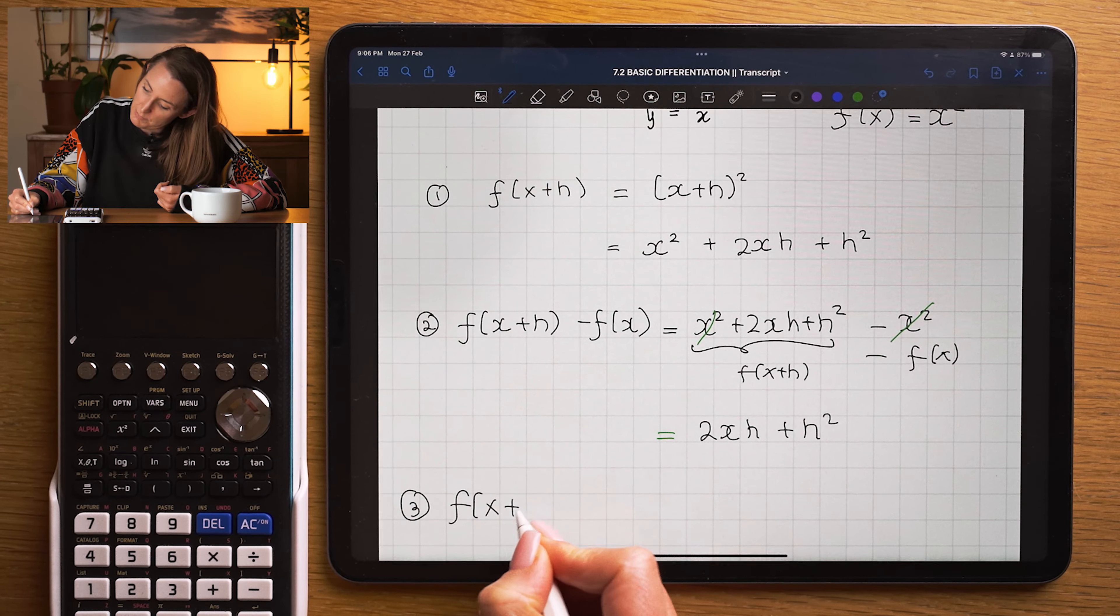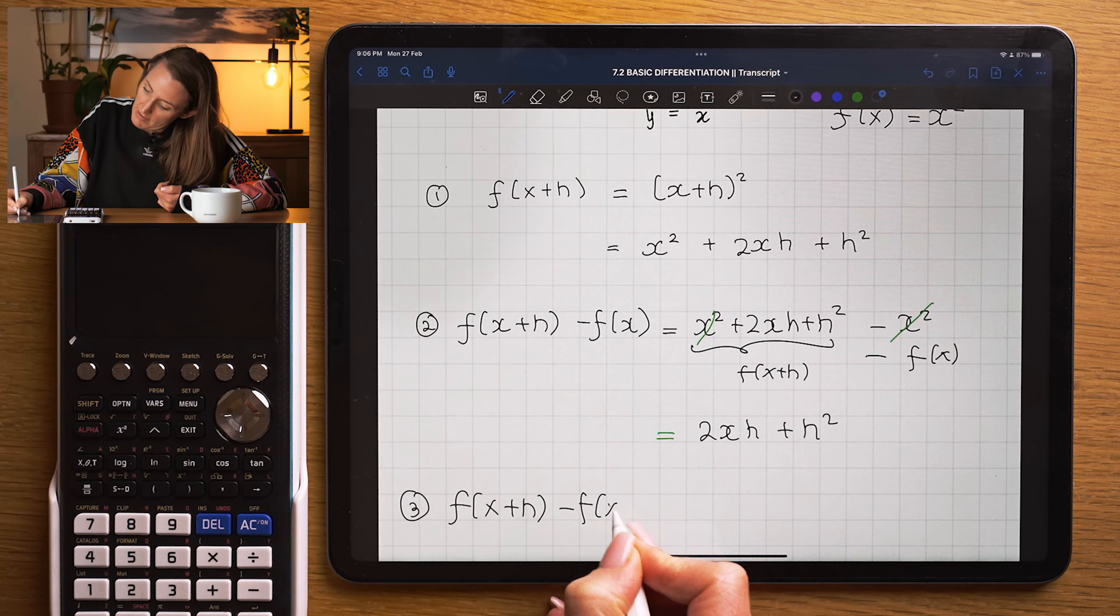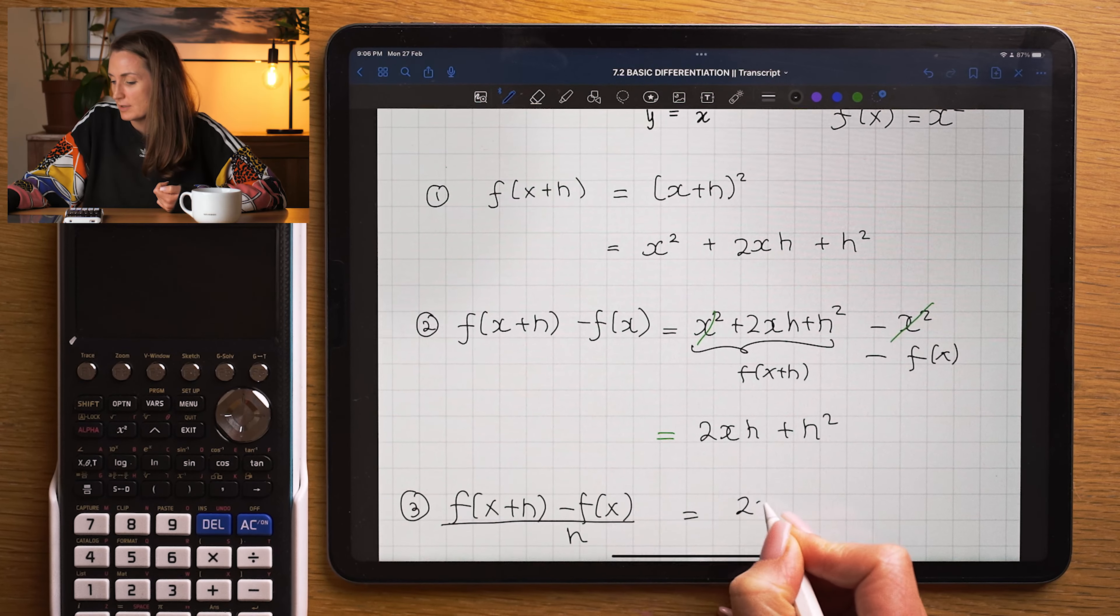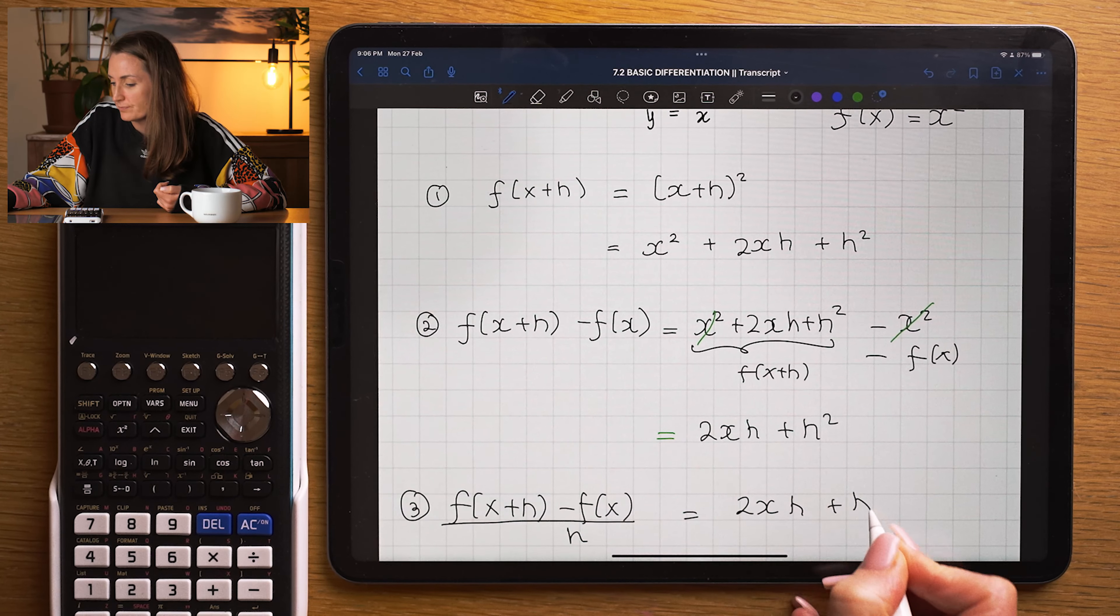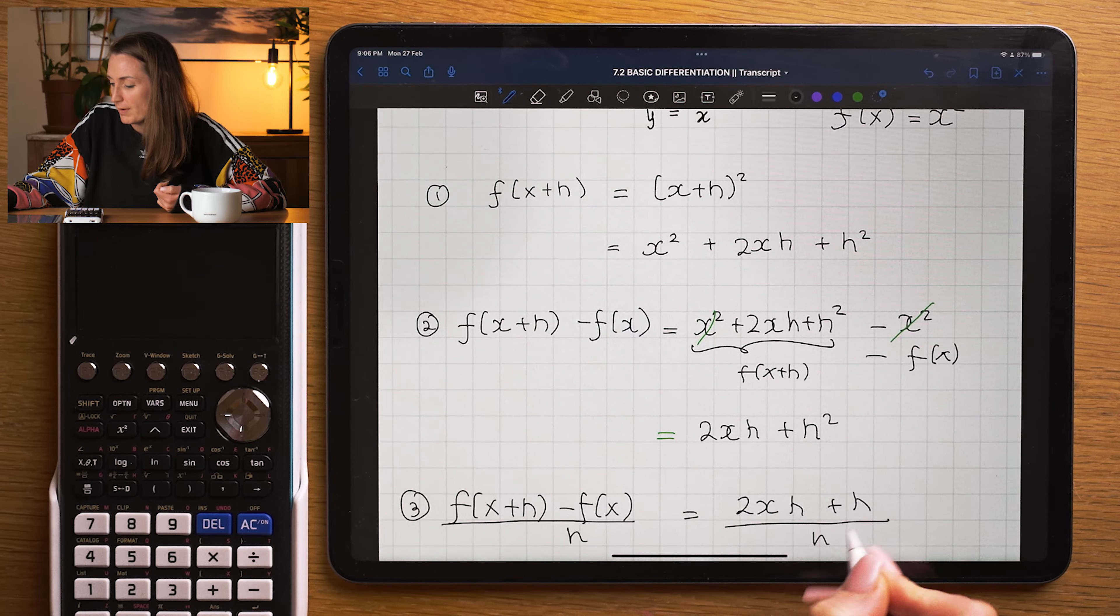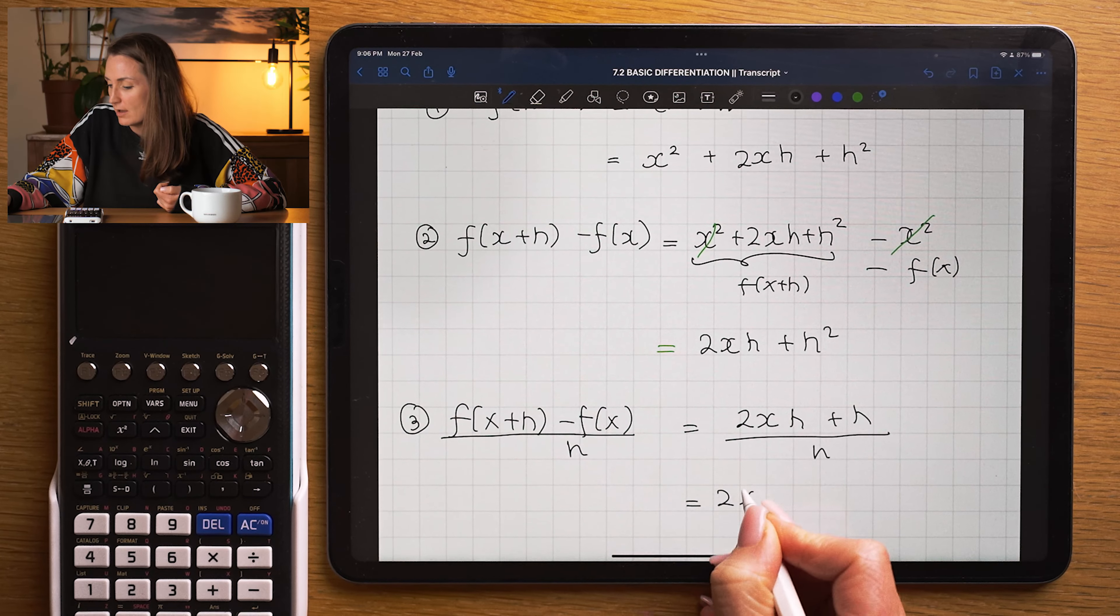Step three, I'm going to do f of x plus h minus f of x divided by h. So I'm going to take this expression, and I'm going to divide by h. I like to split it up first,